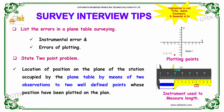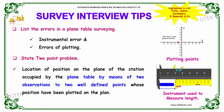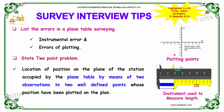Our next question is: state the two-point problem. The answer is the location of the position on the plane of the station occupied by the plane table by means of two observations to two well-defined points whose positions have been plotted on the plane is known as the two-point problem.